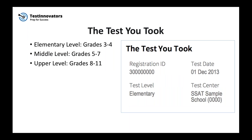The next section is 'The Test You Took.' This tells you where you took the SSAT, when you took it, and what level of the test you took. Just check to make sure that you took the elementary level SSAT if you're in grades three to four, middle level SSAT if you're in grades five to seven, and the upper level SSAT if you're in grades eight to eleven. It's very important to double check this because there is a different score scale for each level.